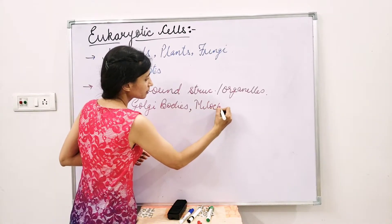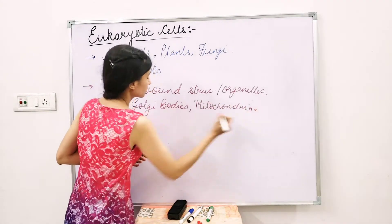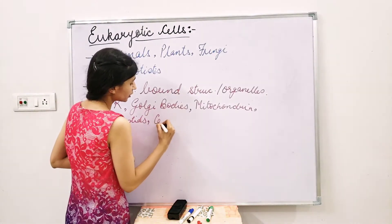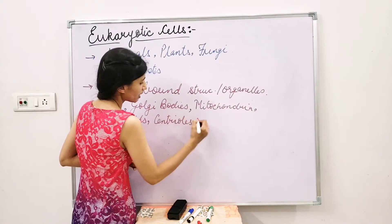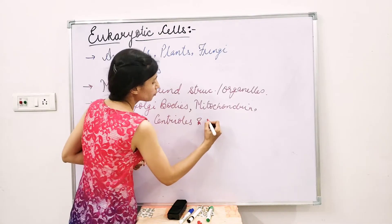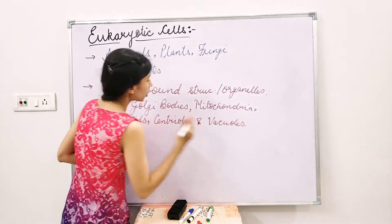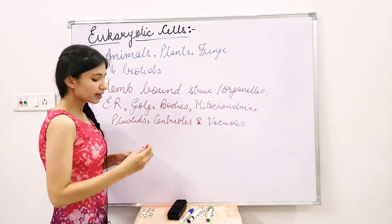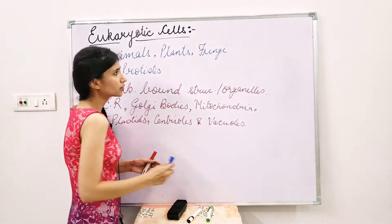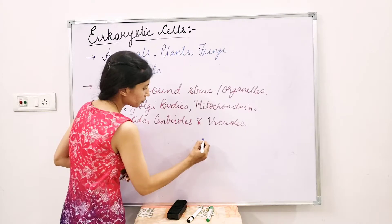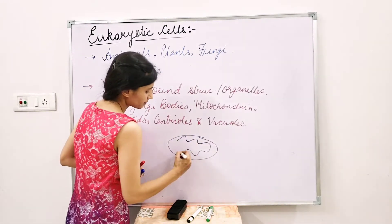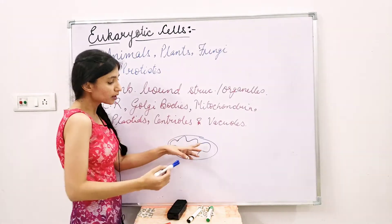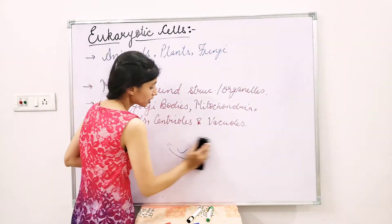Mitochondria also fall under this category, as do plastids, centrioles, and vacuoles. All these structures are actually membrane-bound structures, which means they have an extra covering on them. For example, if I talk about mitochondria — mitochondria is actually a double-layer structure, which means it has two membranes: the outer one and the inner one. This is what we mean by membrane-bound structures.